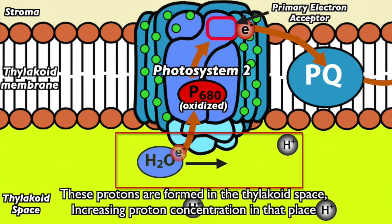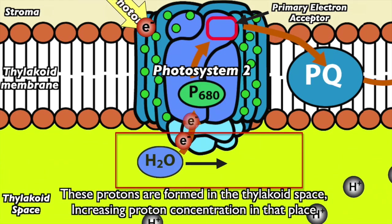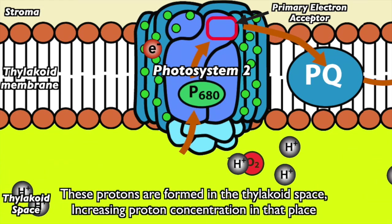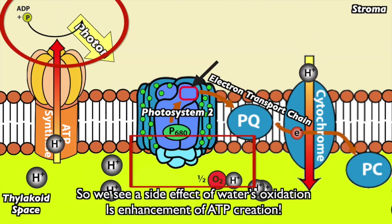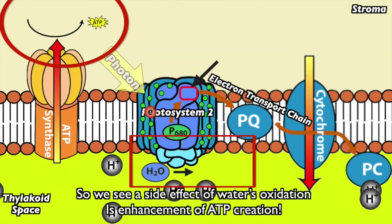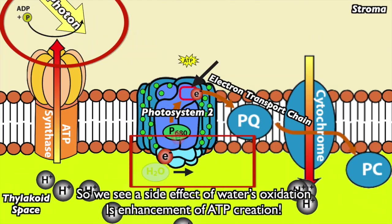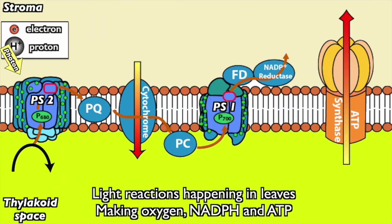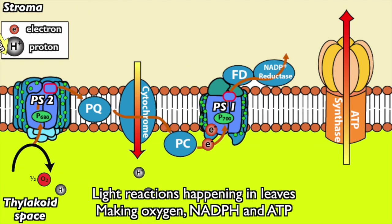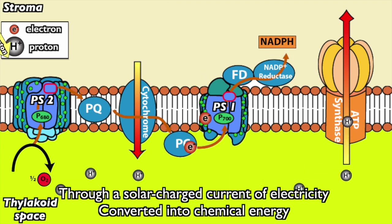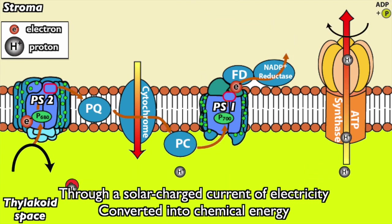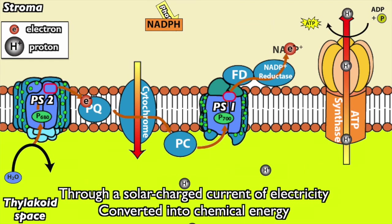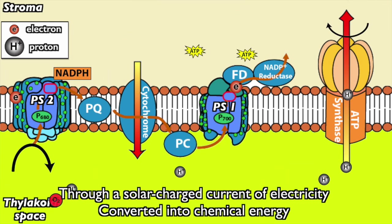These protons are formed in the thylakoid space, increasing proton concentration in that place. So we see a side effect of water's oxidation is enhancement of ATP creation. Light reactions happening in leaves, making oxygen, NADPH and ATP. Through a solar charge current, the electricity converted into chemical energy.